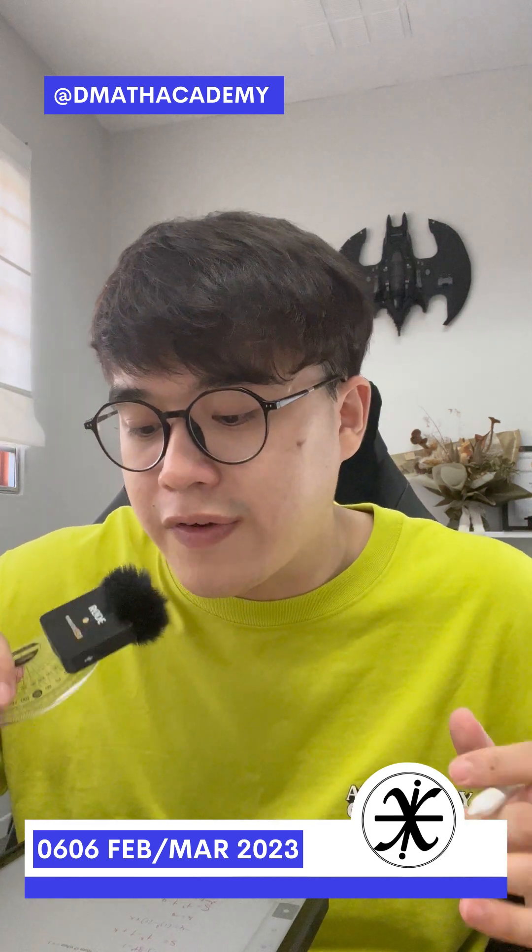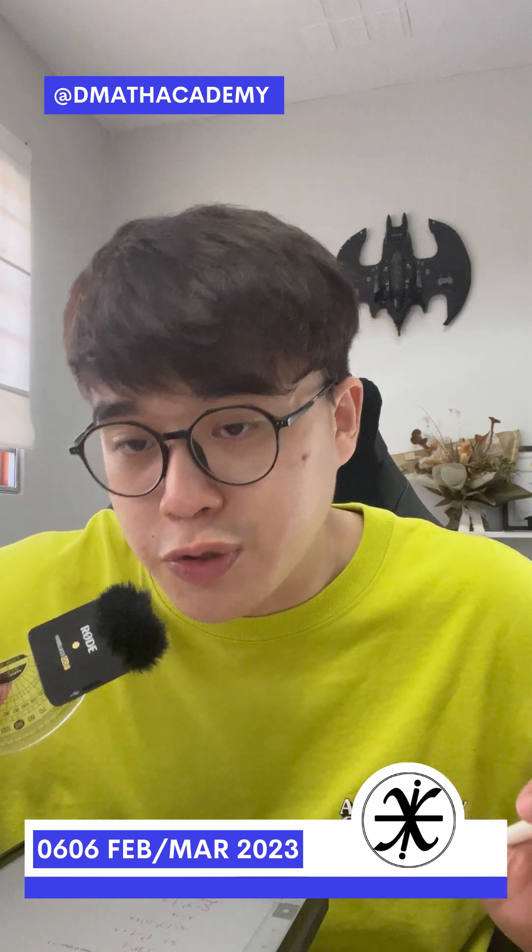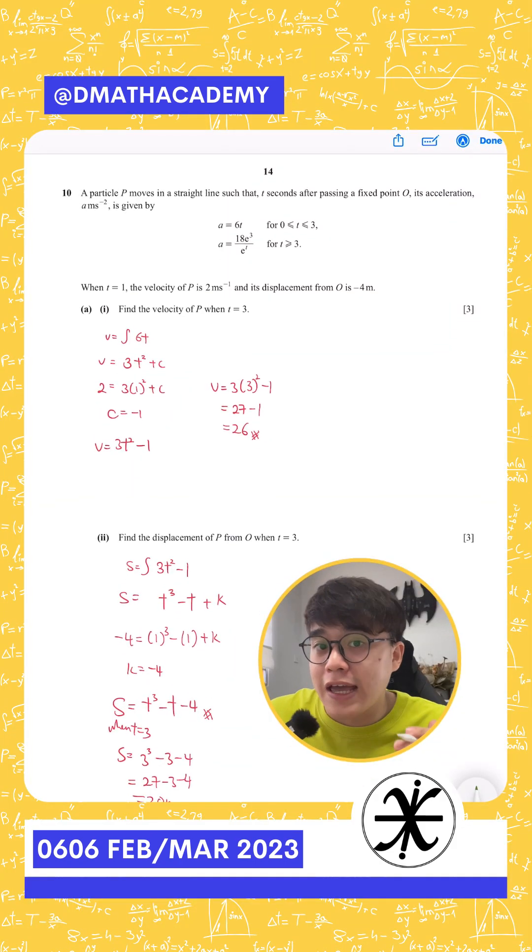Another question that students are struggling with is actually question 10 from the recent February-March 2023 A-Level Maths P2. The reason behind is that you notice they gave you two acceleration formulas and in the inequalities part, they both share the value of 3.